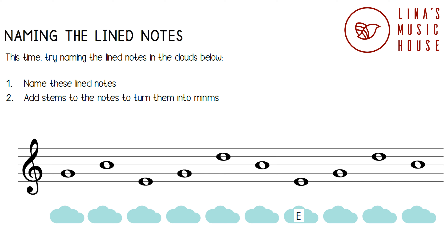The next note is on the second line. The second word in Every Good Boy Deserves Fruit is Good, so this is a G note. The next note is on the fourth line. The fourth word is Deserves, so this is a D note. The last note is on the third line. The third word is Boy, so this is a B note.